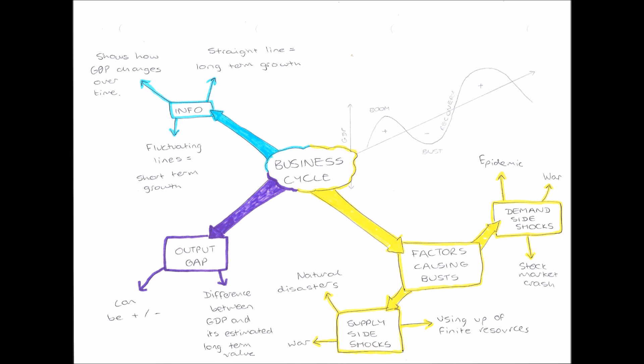And we call these demand side shocks and supply side shocks. So an example of a demand side shock would be an epidemic, so a widespread disease. So lots of people die, or a war as an example. Lots of people die in war. So therefore you've got less people demanding goods, less people buying goods, so therefore demand is lower. And this causes a bust because businesses aren't making profit anymore because they're not selling goods.